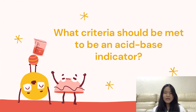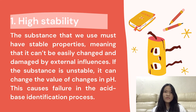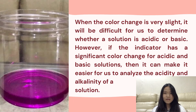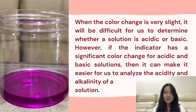What criteria should be met to be an acid-base indicator? One of the criteria is to have high stability — the substance we use must have stable properties, meaning it cannot be easily changed or damaged by external influences. If the substance isn't stable, it can change the value of changes in pH, causing failure in the acid-base identification process. The second criteria is to have a significant color change. A good acid-base indicator should have a significant color change for both acidic and basic solutions. When the color change is very slight, it will be difficult to determine whether a solution is acidic or basic. However, if the indicator has a significant color change, it makes it easier to analyze the acidity and alkalinity of a solution.